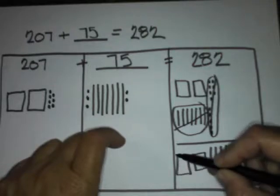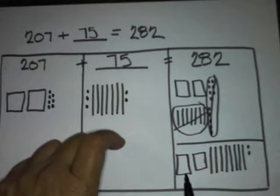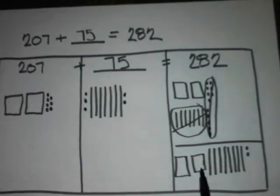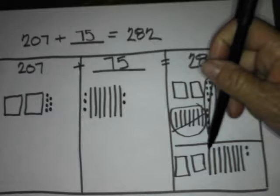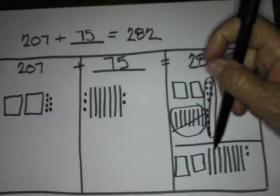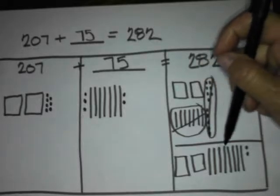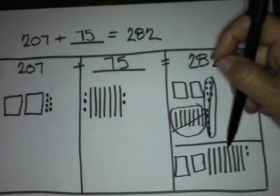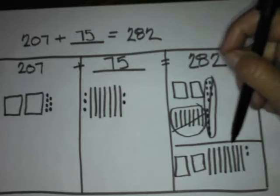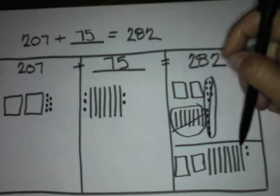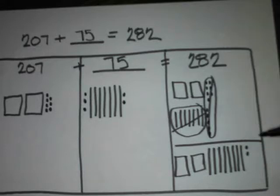So let's count on: 100, 200, 210, 220, 230, 240, 250, 260, 270, 280, 281, 282. Boom! We're done.